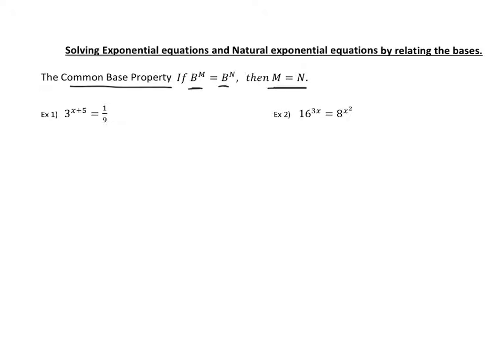Let's look at example one. We have 3 raised to the x plus 5 on one side, and on the other side we have 1 over 9. We want to try to get the same base. We do know that 9 is 3 squared, so we can rewrite that as 1 over 3 squared.